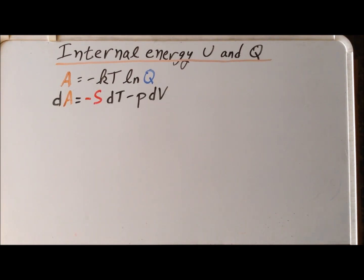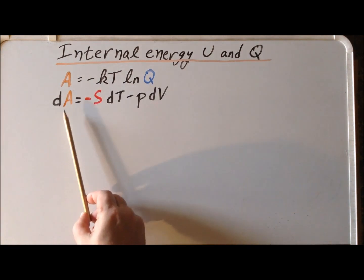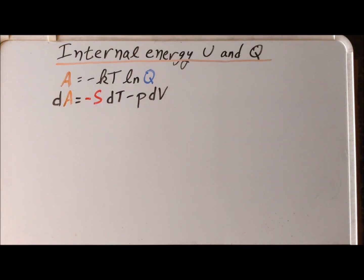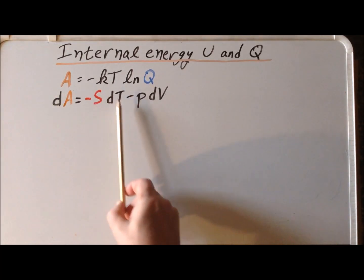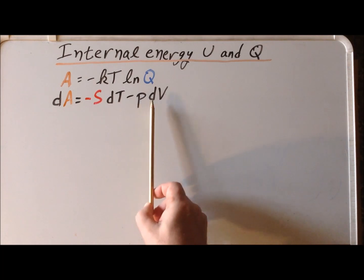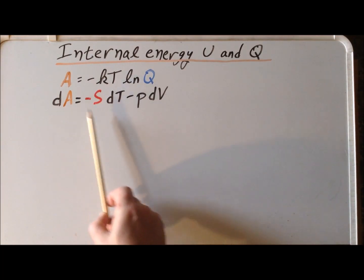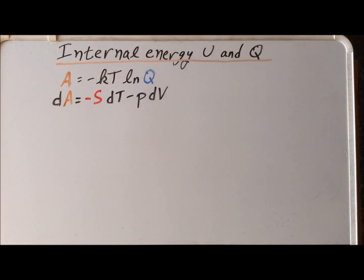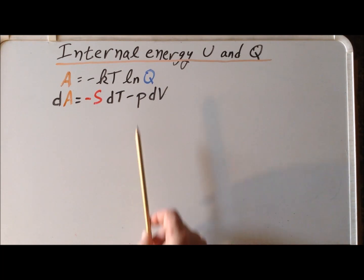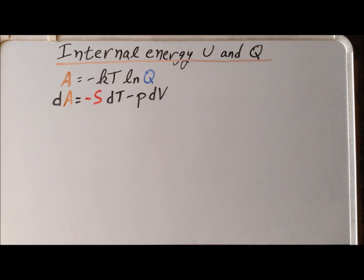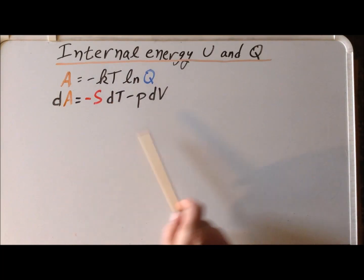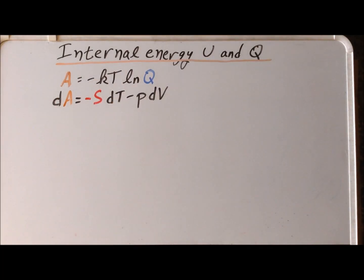Next we recall that the differential of the Helmholtz energy A is equal to minus S dT minus P dV, where S is the entropy, T is the thermodynamic temperature, P is the pressure, and V is the volume. This is the relationship for a closed system.